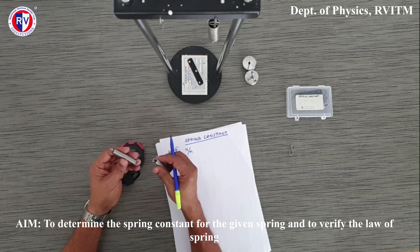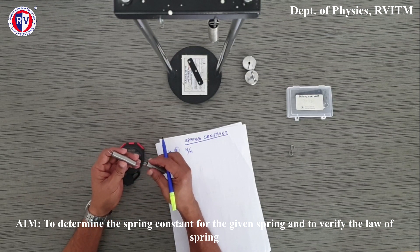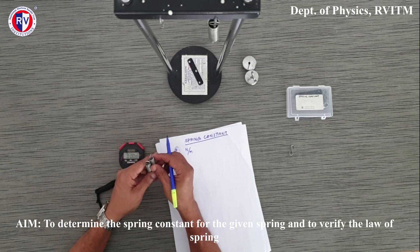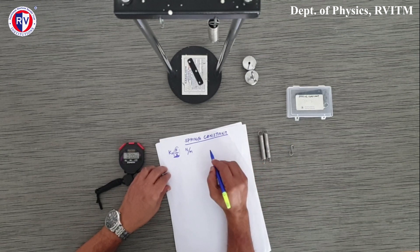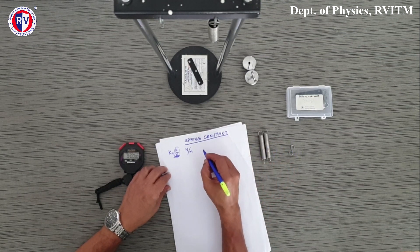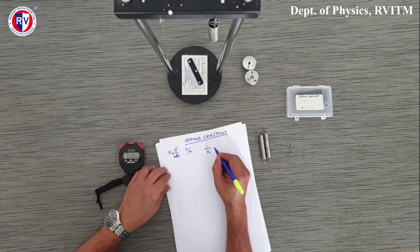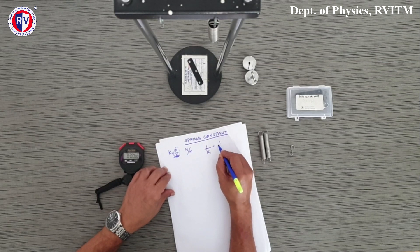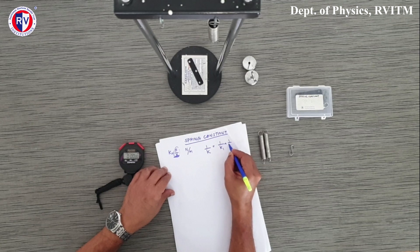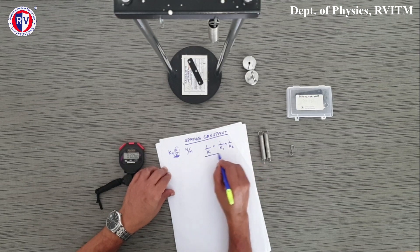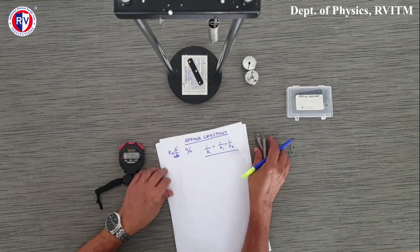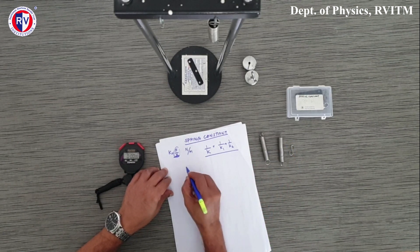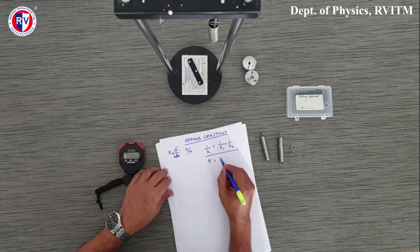The law of springs means when two springs are connected in series, there will be an effective spring constant. We know the reciprocal of the effective spring constant — if I take that as k — one by k is equal to the sum of the reciprocals of the two individual springs. This is the law of series combination of springs. When connected in parallel, the effective spring constant is the sum of the individual spring constants.